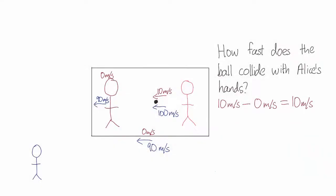Bob sees the ball flying to the left at 100 meters per second, but Alice is also moving to the left at 90 meters per second. The speed that Bob sees the ball hit Alice's hands at will be the difference between these two, or 10 meters per second.